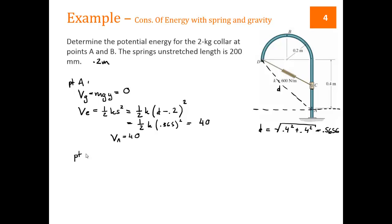Now, let's look at point B. Our gravitational potential energy at point B, B is up here. This is point 2. It's the radius. So, is MgY. Y is above the datum, so it's going to be positive. Mass is 2, 9.81 times 0.4 plus 0.2.